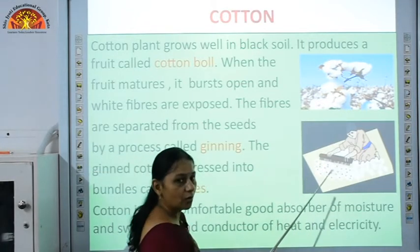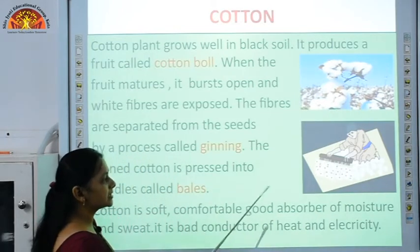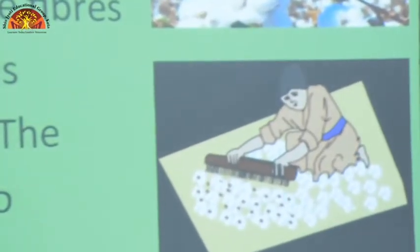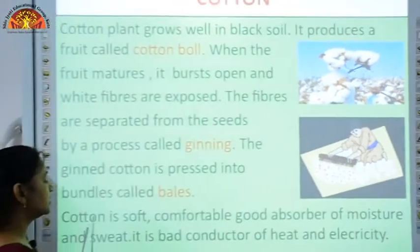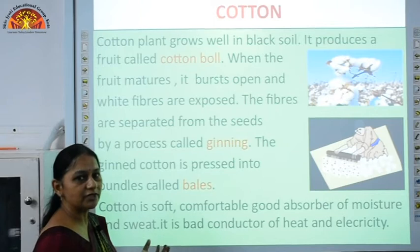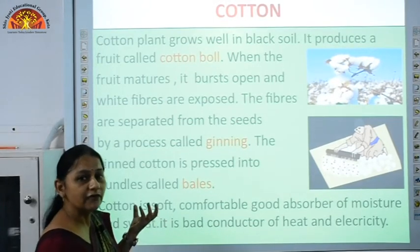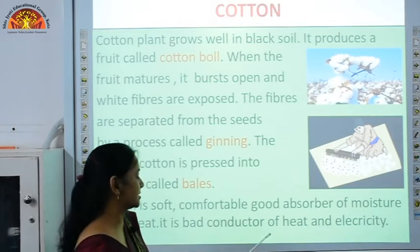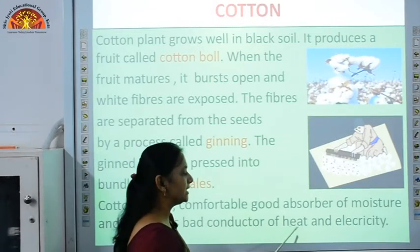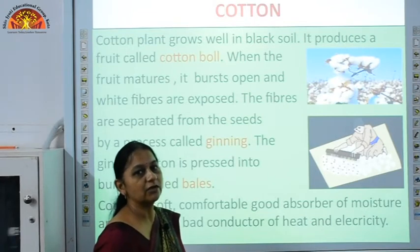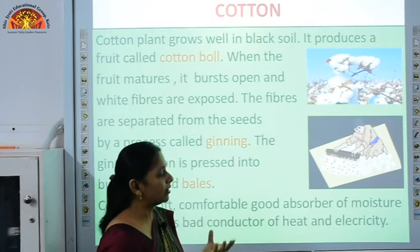Ginning can be done by hand, with the help of a large comb, or by machines. The ginned cotton, which has no seeds in it, is pressed and bundles are formed. Cotton is soft, comfortable and a good absorber of moisture and sweat. It is comfortable to wear in the summer season. It has air spaces through which air passes, and it is a bad conductor of heat and electricity. Thus it is advised to wear cotton clothes in the kitchen while using heat or electricity.